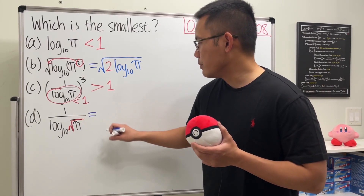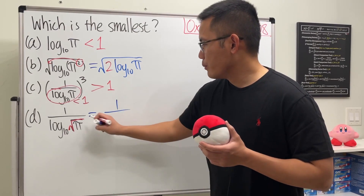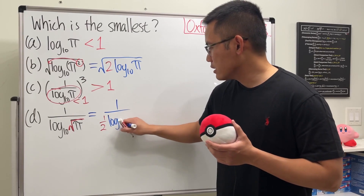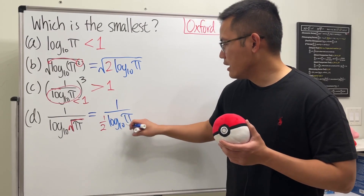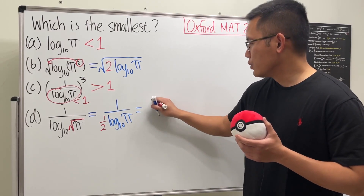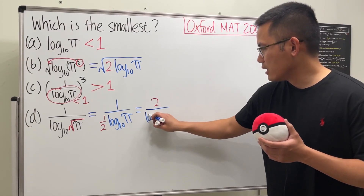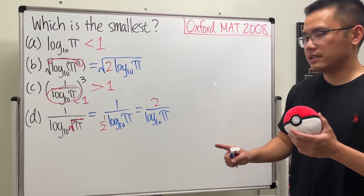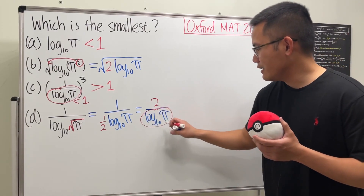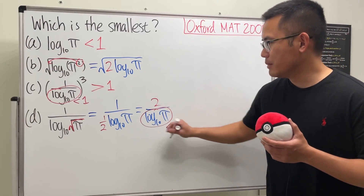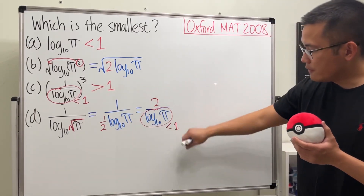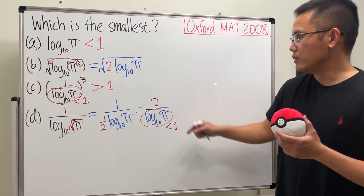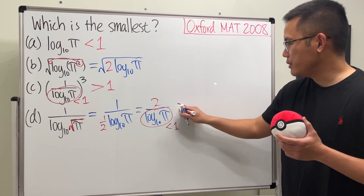We can put a square root as the one-half power, so this becomes 1 over — bring the one-half to the front — one-half log base 10 of pi. We can put a 2 up, so we get 2 over log base 10 of pi. Because log base 10 of pi is less than 1, when you divide the whole thing will be bigger than 2, so this right here we know for sure is bigger than 2.